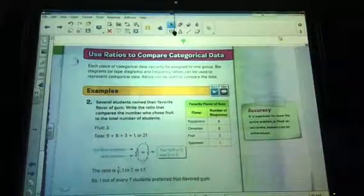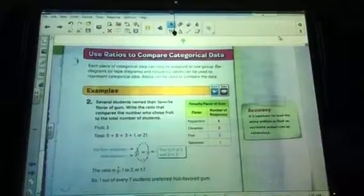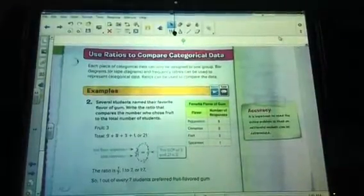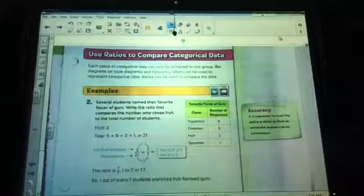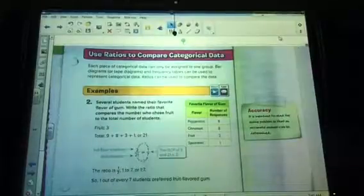The first example is several students named their favorite flavor of gum. Write the ratio that compares the number who chose fruit to the total number of students. Now here's where it gets tricky. When we talk about the total number of students, we have to talk about even those that like a certain flavor.